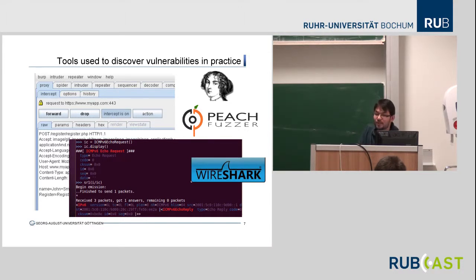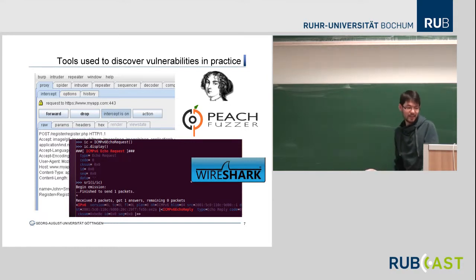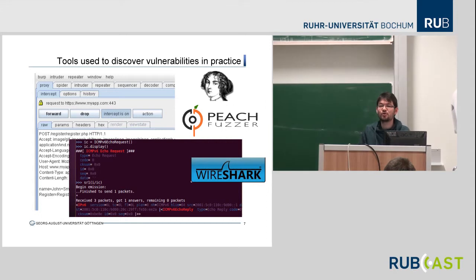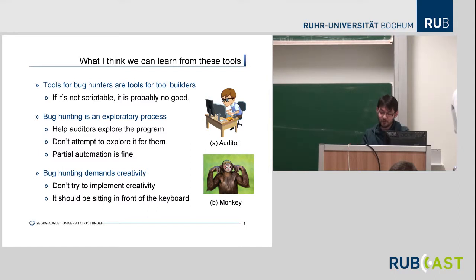And of course there's IDA Pro for reverse engineering. What I think makes all of these tools very similar is that they don't try to replace analysts. Instead, they try to enhance their abilities. They try to help analysts explore the program, and they realize it's perfectly fine if we don't try to automate bug finding entirely, but only partially. What's important, especially when you look at machine learning, is that you don't try to get a program which actually decides whether something is vulnerable — that should be something an auditor decides.